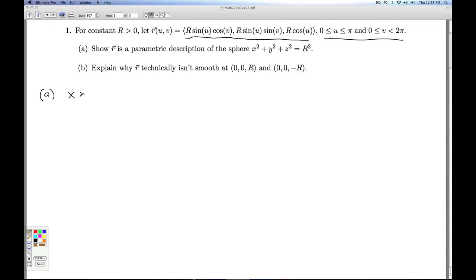All right, so on this surface, x is given by big R sine u cosine v, y is given by big R sine u sine v, and z is given by big R cosine u.